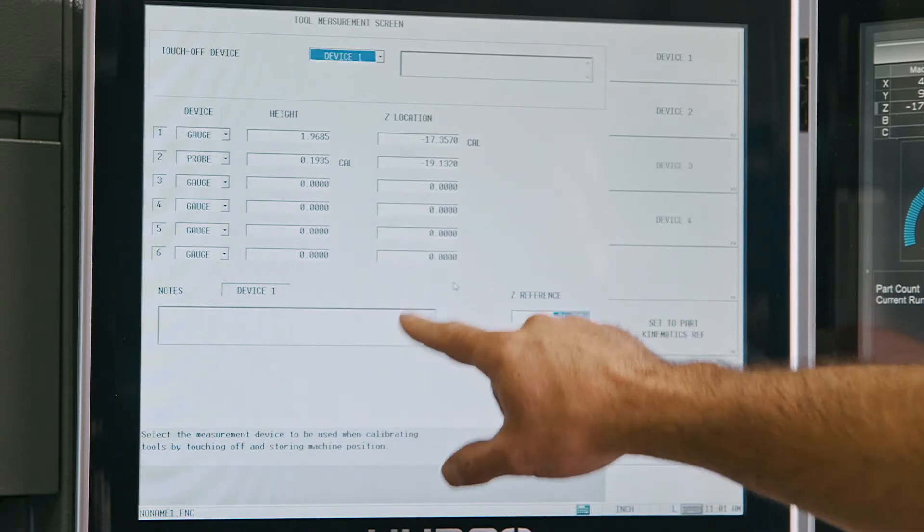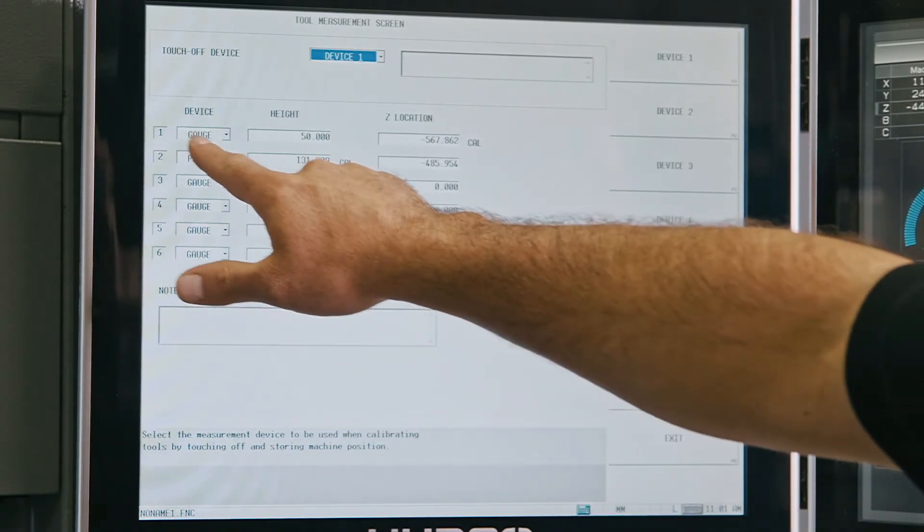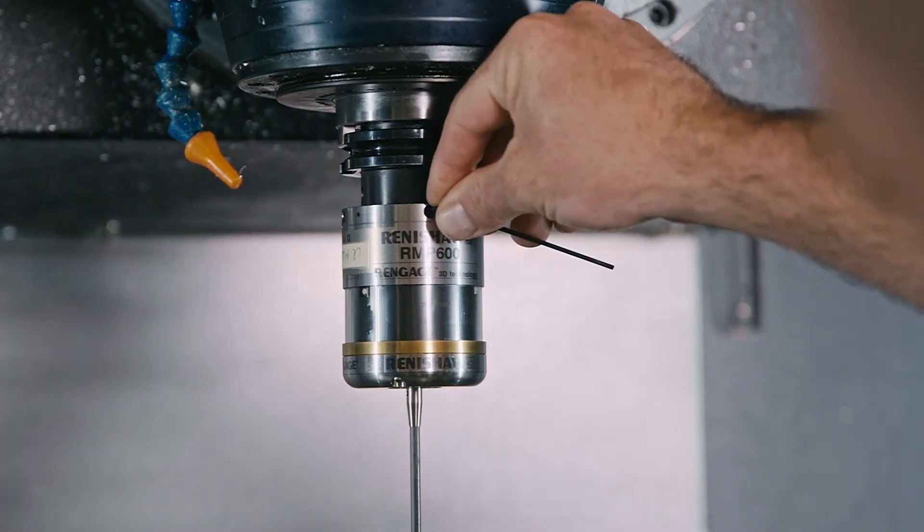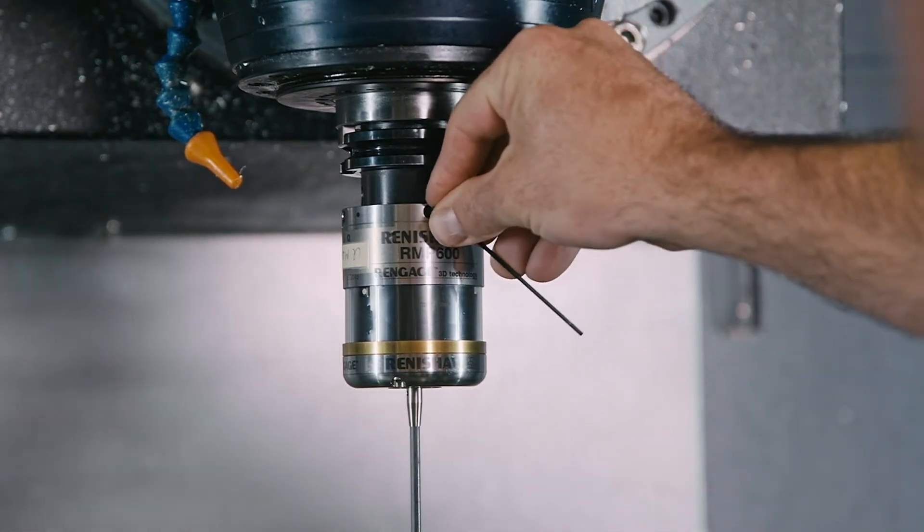Now make sure that your toolsetter is the active device. Insert the part probe and place your dial indicator. Check your probe alignment and make any necessary adjustments before moving forward.